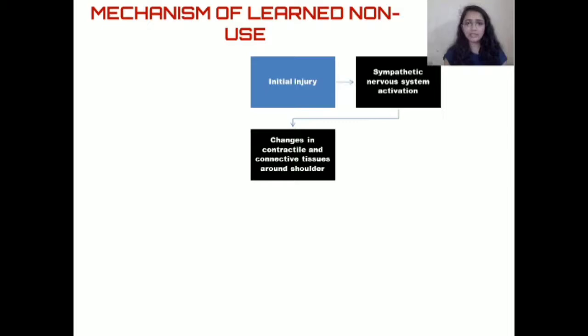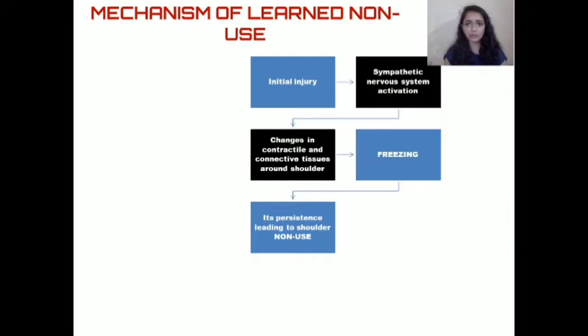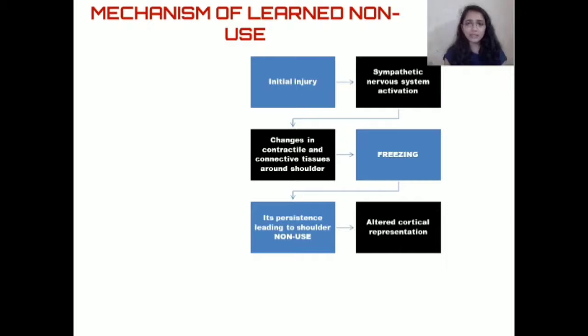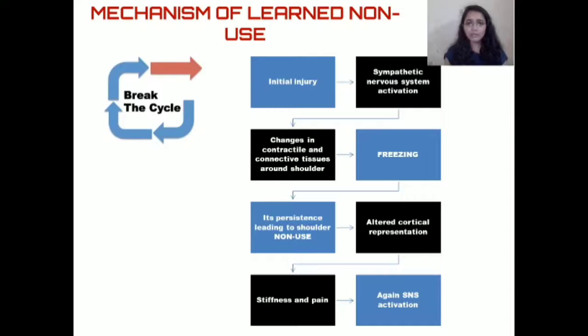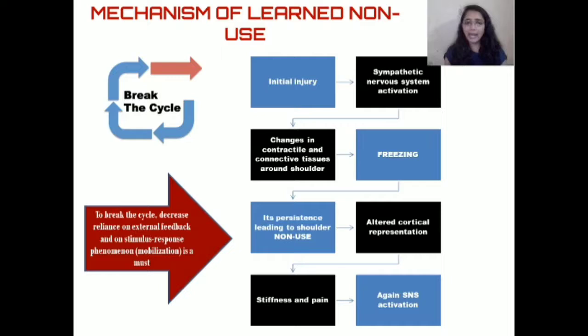Let us first see the mechanism of learned non-use. The initial episode of frozen shoulder leads to sympathetic nervous system activation, which leads to changes in the contractile and connective tissues surrounding the shoulder — this is the freezing stage. Due to pain and stiffness, the patient restricts activities, leading to shoulder non-use. This alters the cortical representation of the shoulder joint and associated movements in the brain, which increases stiffness and pain, perpetuating the sympathetic nervous system activation in a vicious cycle. To effectively treat frozen shoulder, it is necessary to break this cycle.